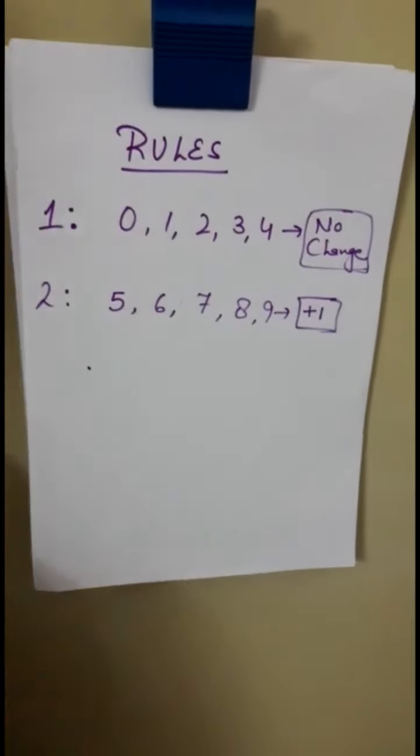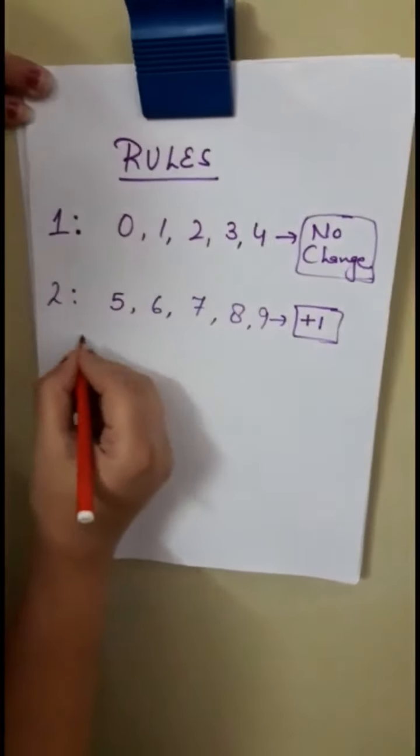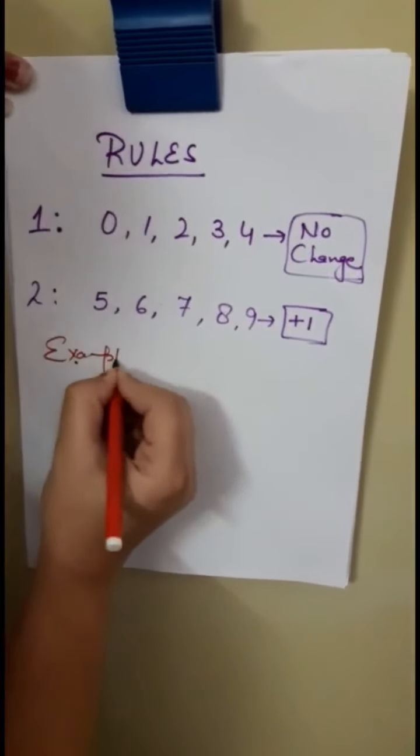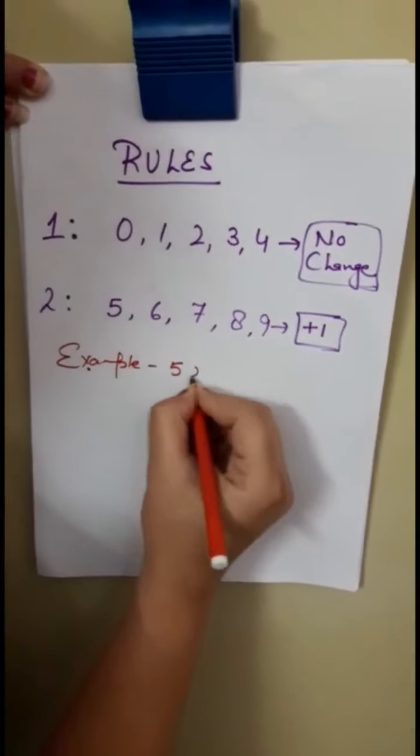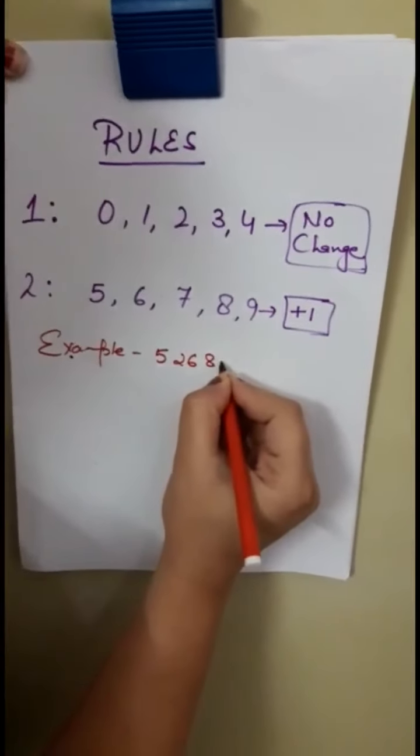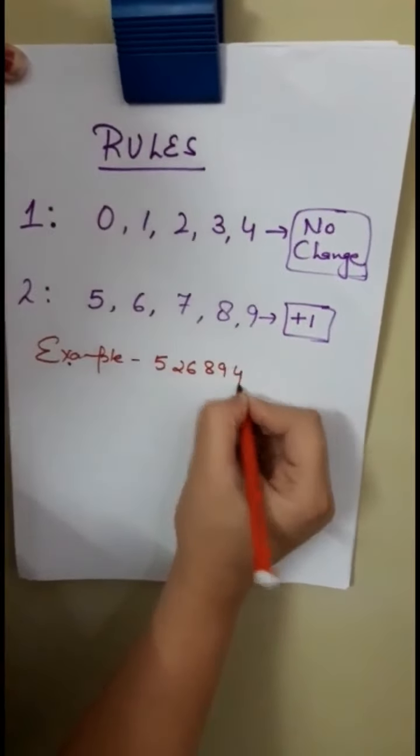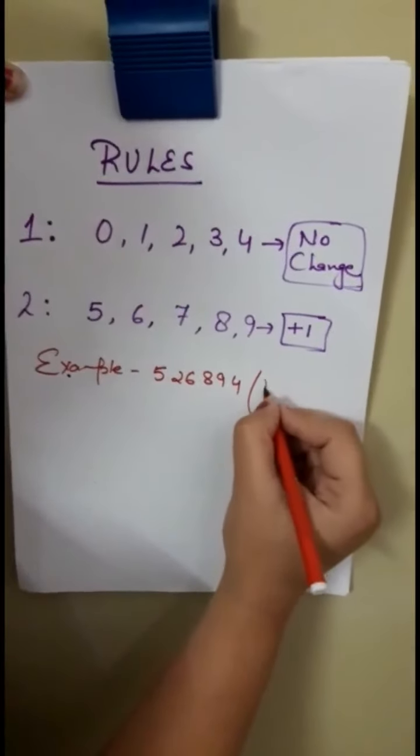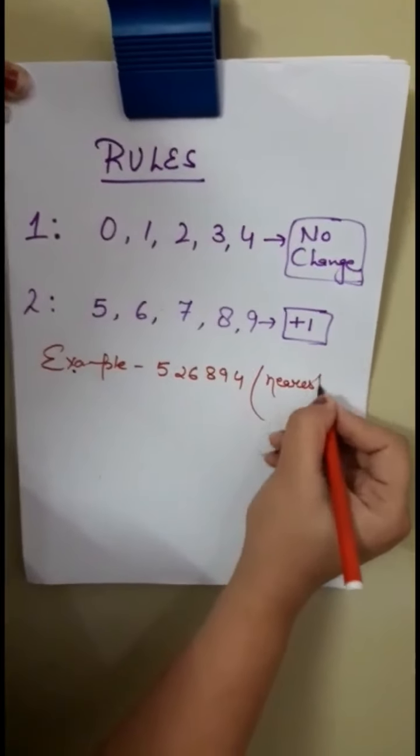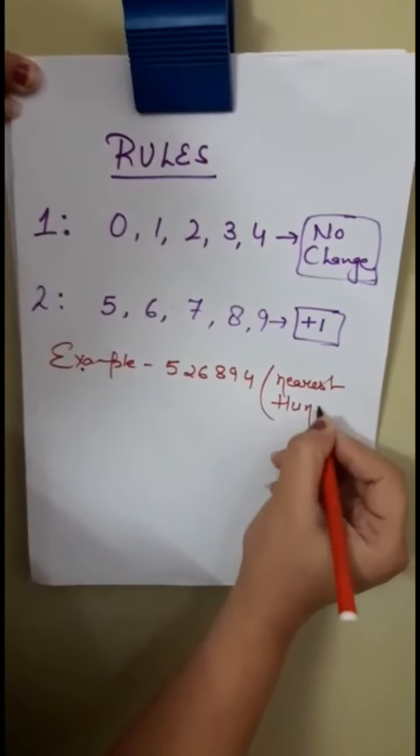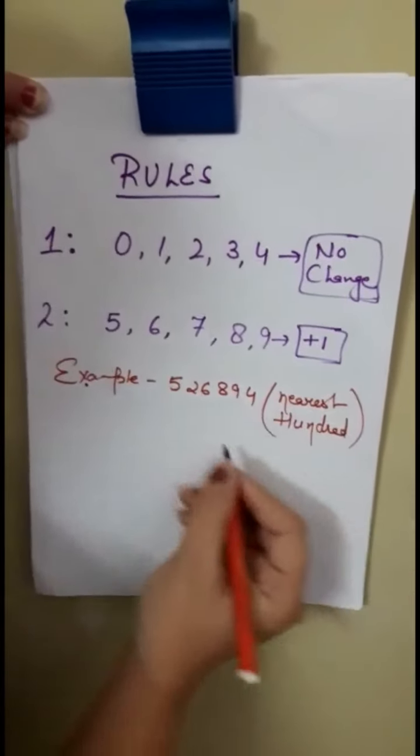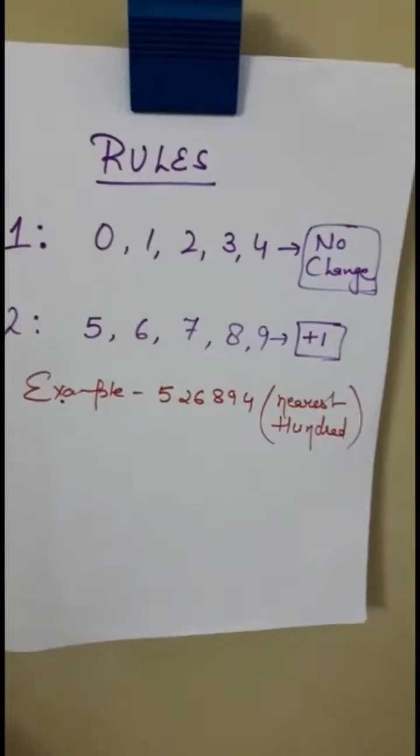Now let's have another example. Another number I am going to take: 526894. Is number ko mujhe round off karna hai to nearest 100. Aapko isko 100 ki place pe round off karna hai. Understood? To ab aap pehle 100 ki place identify karlo. Kaunsi hai?